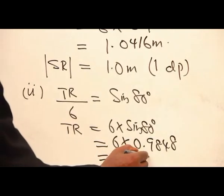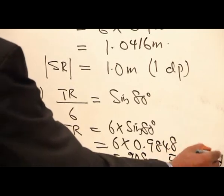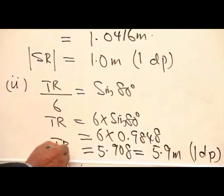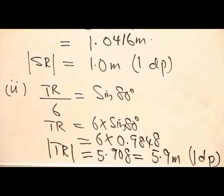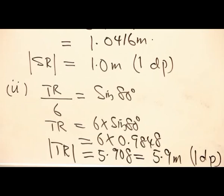Which is equivalent to 5.9 meters to 1 decimal place. That's the value of TR, the height of the ladder above the ground.